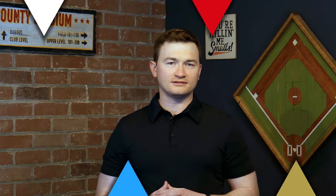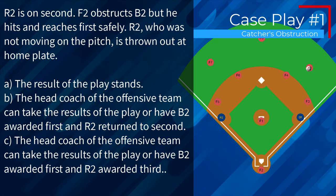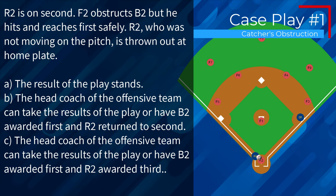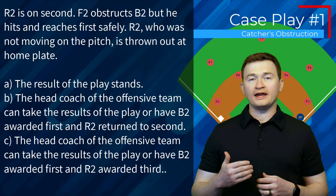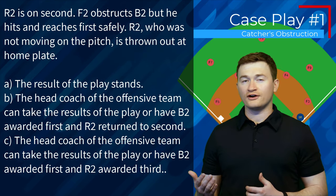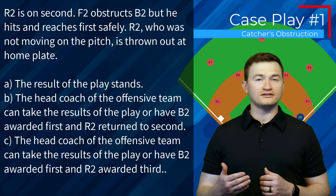Case play number one. R2 is on second. F2 obstructs B2, but he hits and reaches first safely. R2, who was not moving on the pitch, is thrown out at home plate. Is this A, the result of the play stands; B, the head coach of the offensive team can take the result of the play or have B2 awarded first and R2 return to second; or C, the head coach can take the results or have B2 awarded first and R2 awarded third? The correct answer is A — the result of the play stands. Because R2 safely advanced to third and the batter runner safely advanced to first, everyone has advanced at least one base safely, so the catcher's obstruction is ignored regardless of what happens next.